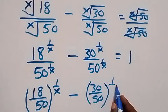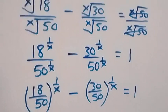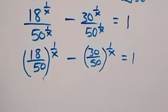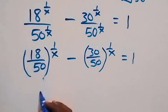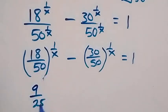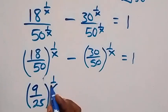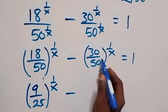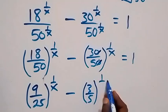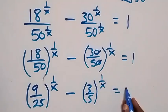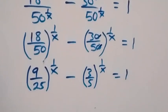From here we can reduce the fractions inside the brackets. 18 over 50 reduces to 9 over 25, raised to power 1 over x. Then 30 over 50 cancels to 3 over 5, raised to power 1 over x, which equals to 1.